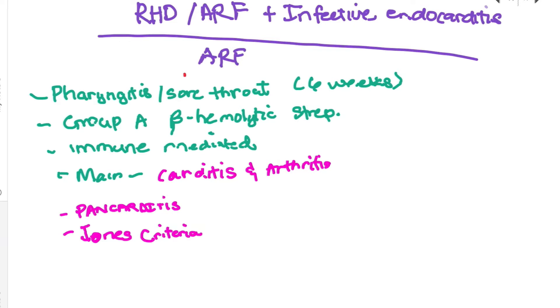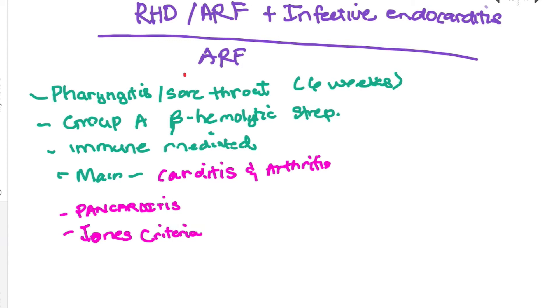Acute rheumatic fever is an immune-mediated response. The main presentations are carditis and arthritis. In 40% of patients, pancarditis occurs, which is inflammation of the three layers of the heart. The Jones criteria is used in clinical settings to diagnose patients with this disease.